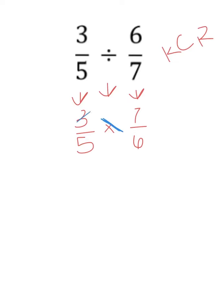I'm going to do 3 divided by 3 is 1, and 6 divided by 3 is 2. Then I go the other direction, 5 and 7, and I don't see anything in common except 1, so I am done cross-simplifying.